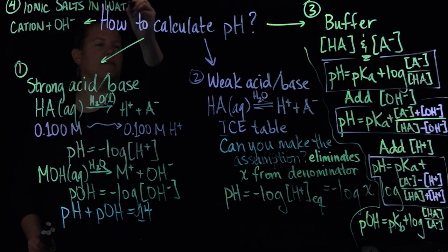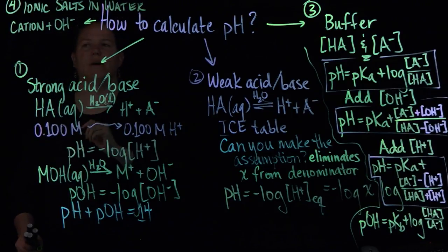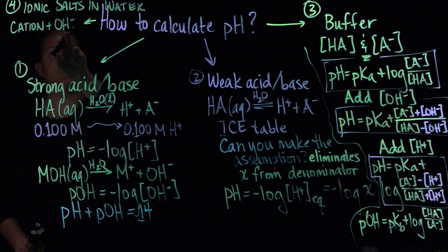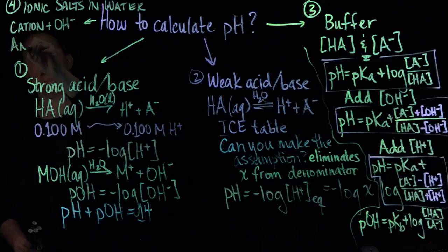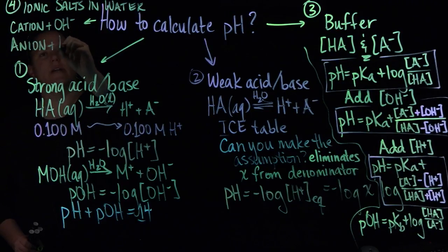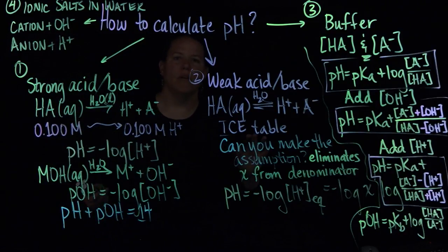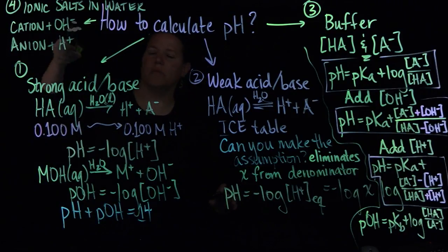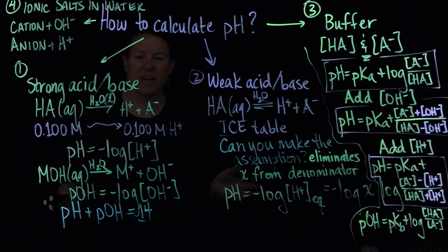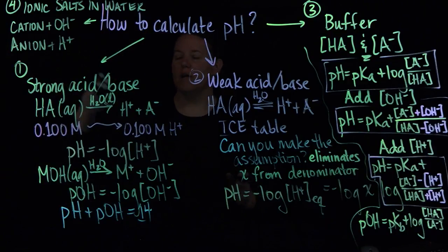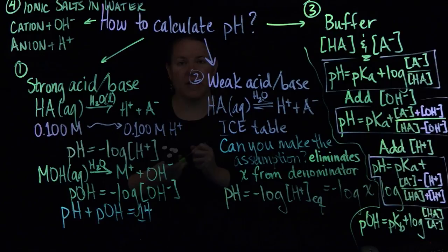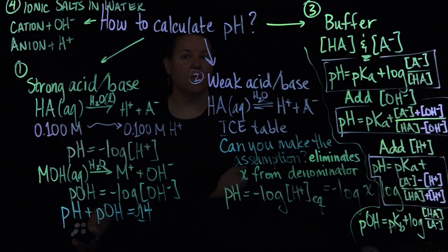Ionic salts in water is what we should really call this. Because you're going to take the cation of the ionic salt to add it to the OH. You're going to take the anion of the ionic salt and add it to H+. And then you're going to determine if the cation plus OH makes generally a strong base or a weak base. Anion plus H plus gives you a strong acid or a weak acid. The strong wins out.